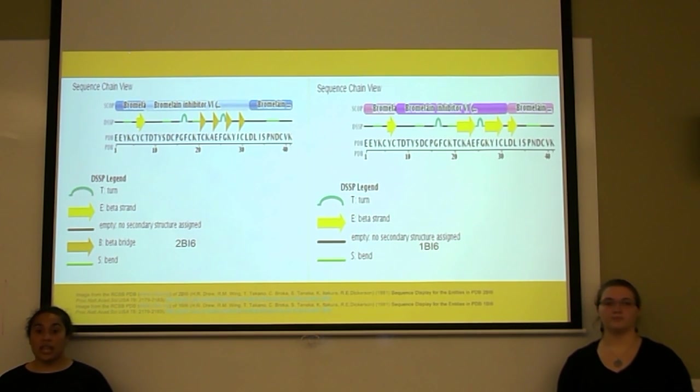2Bi6 structure is comprised of 23% helix, 18% anti-parallel sheets, 5% parallel sheets, 28% turns, and with the remaining 35% contributing to the structure formation.